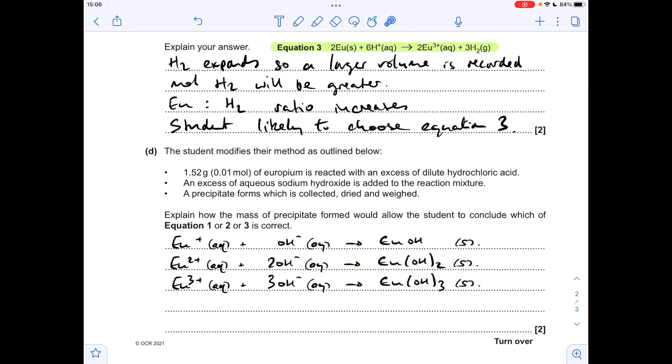So finally part D where we've got to use this modified method and explain how the results can be used to get to the right equation. You'll notice that I've written up the three possible hydroxide precipitation reactions so if equation one had been correct you would have got this hydroxide of europium.